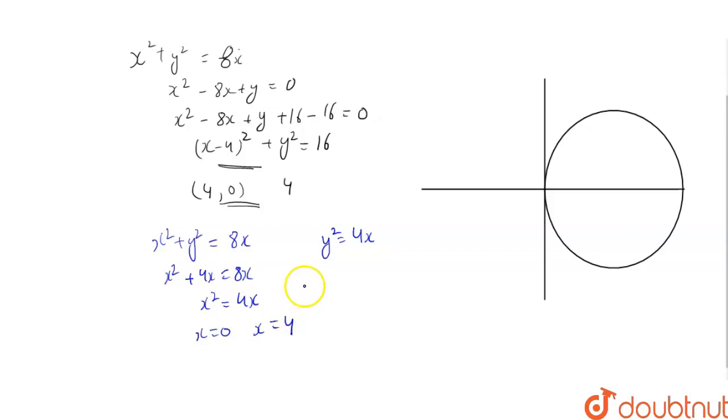That is, somewhere here. This is 4. This is 4, 0 and this is 4. So, parabola will curve like this and we need this shape.